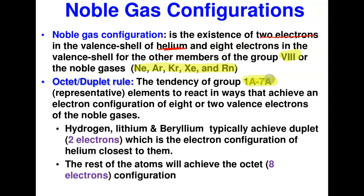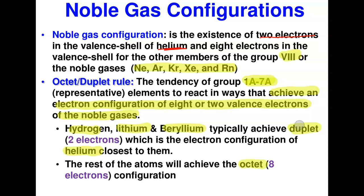The octet rule is the tendency of representative elements — from group 1A to group 7A — to react in chemical reactions to achieve electron configurations like those of the noble gases. They either gain or lose electrons to achieve eight electrons (the octet) in their valence shell. Hydrogen and helium, being small, follow the duplet rule — achieving two electrons like helium.